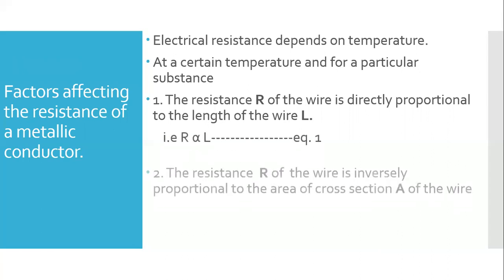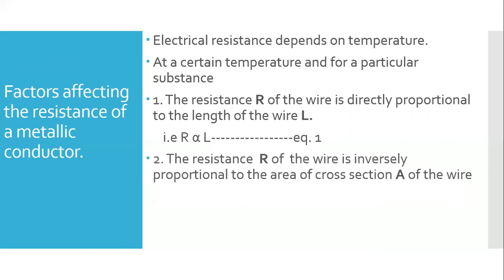The second factor: the resistance R of a wire is inversely proportional to the area of cross-section A. If we use a thick wire, its resistance decreases, and if we use a thin wire, the resistance increases.